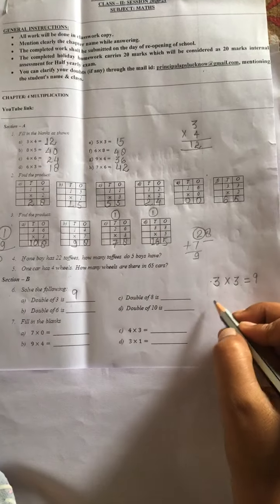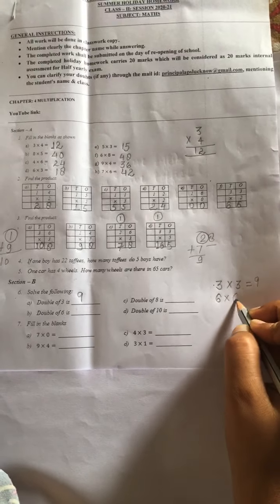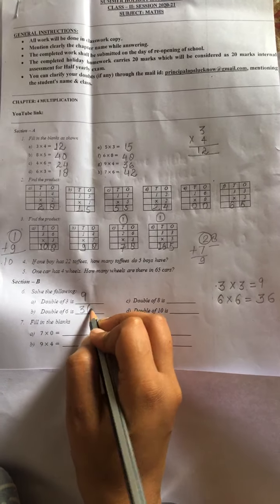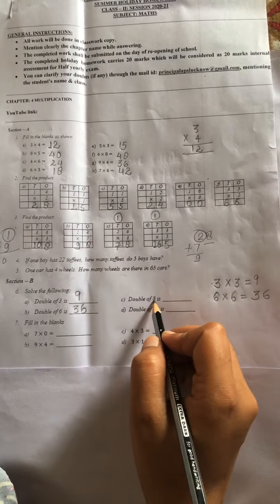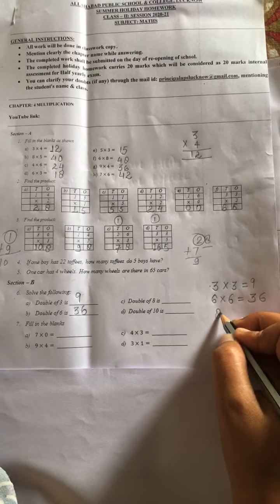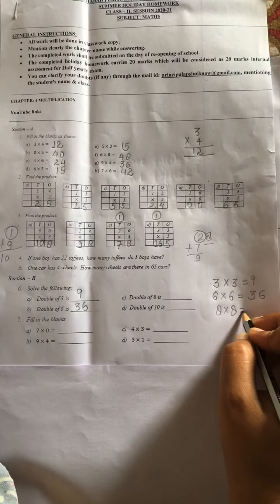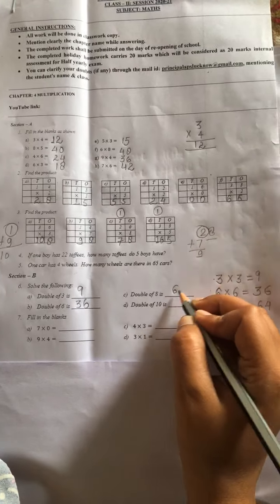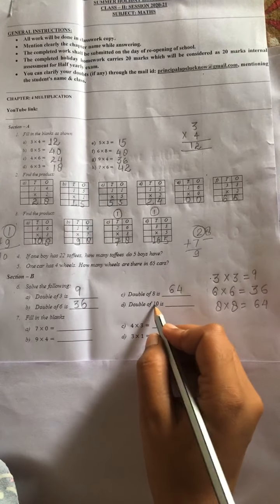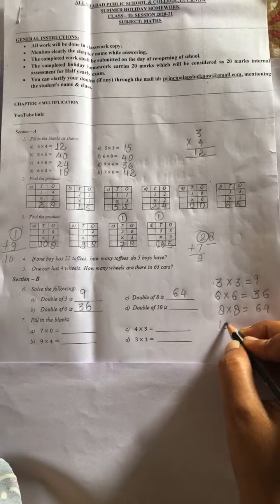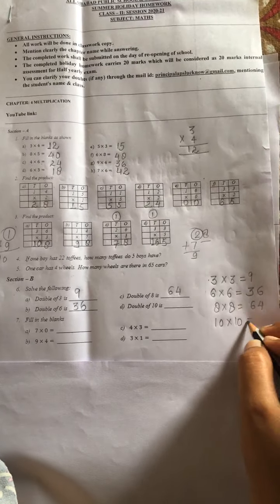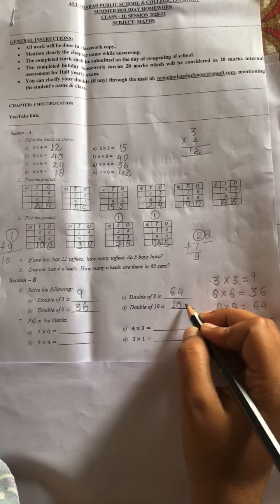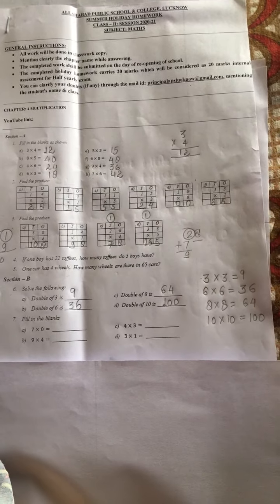So 12 will be right here. Now see. Double of 8 is, matlab 8 into 2, 8 times 2 is 16. So 16 will be right here. Double of 10 is, 10 times 2. So 10 times 2 is 20. 20 will be right here.